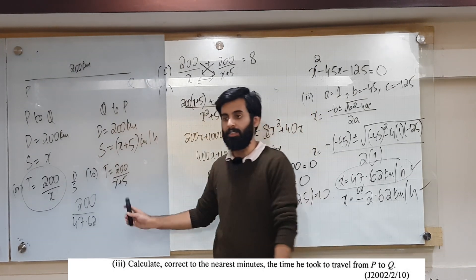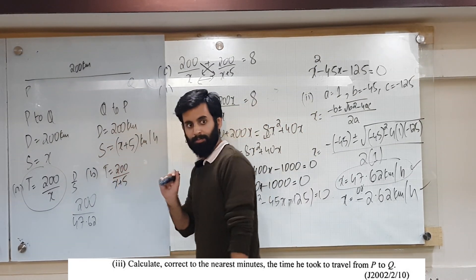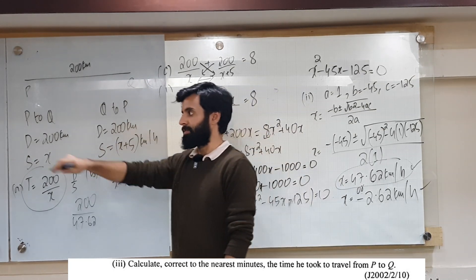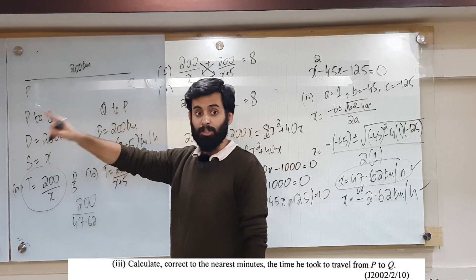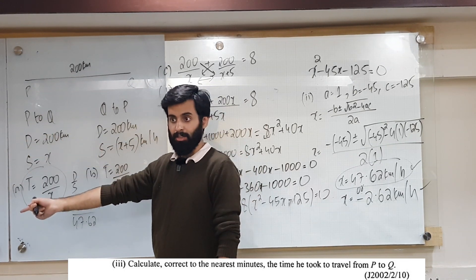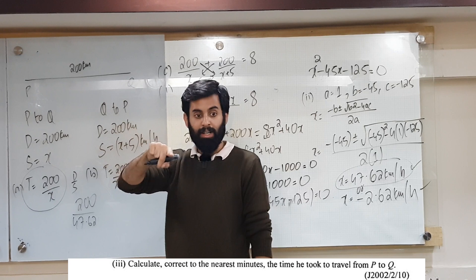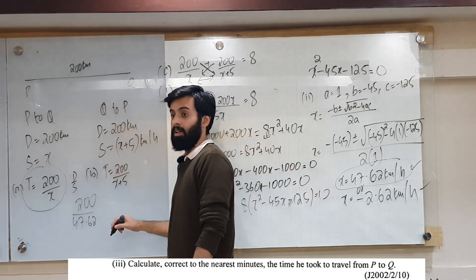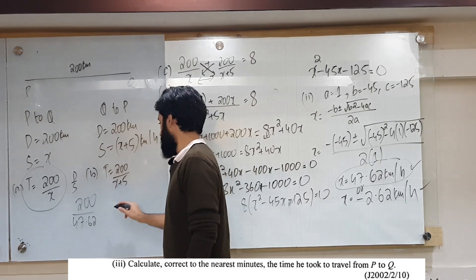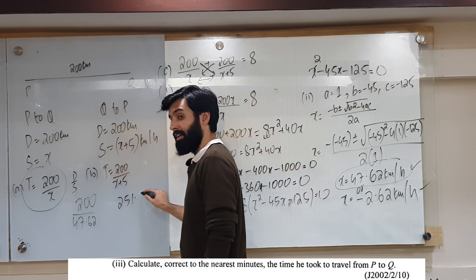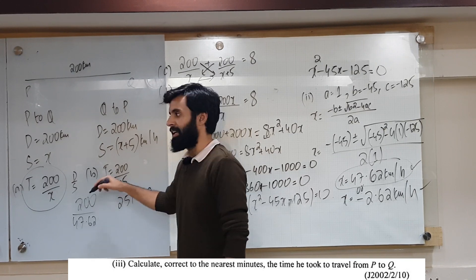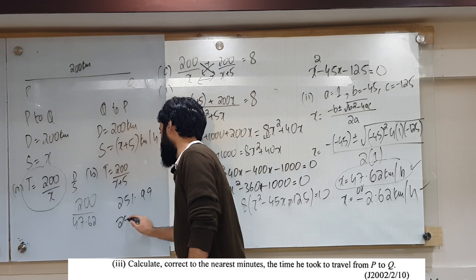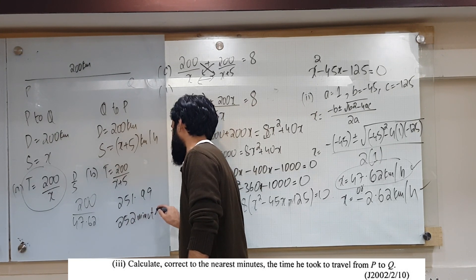The answer is 4.1 hours, but the question is asking for the answer in minutes. To convert from hours to minutes, multiply by 60. 4.1 times 60 gives approximately 251.99. Correct to the nearest minute, that is 252 minutes. So 252 minutes is our final answer.